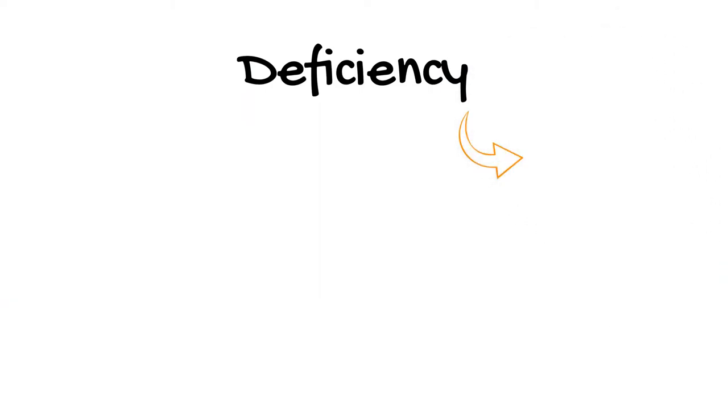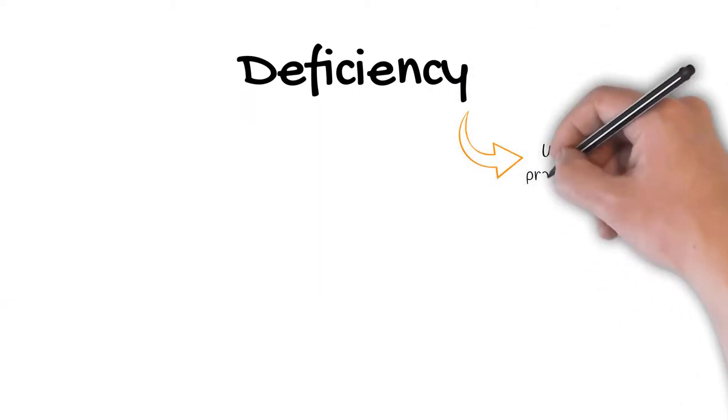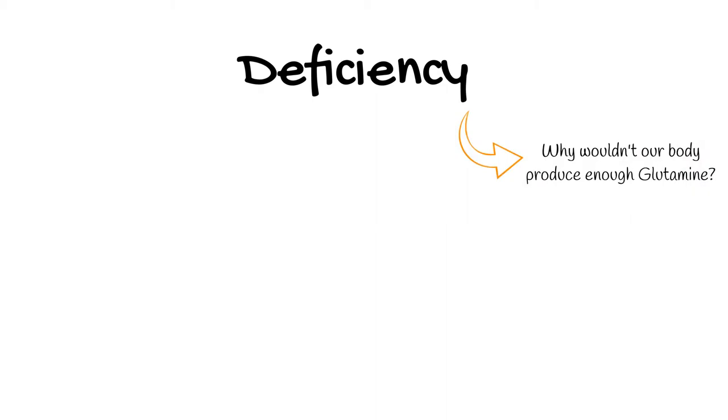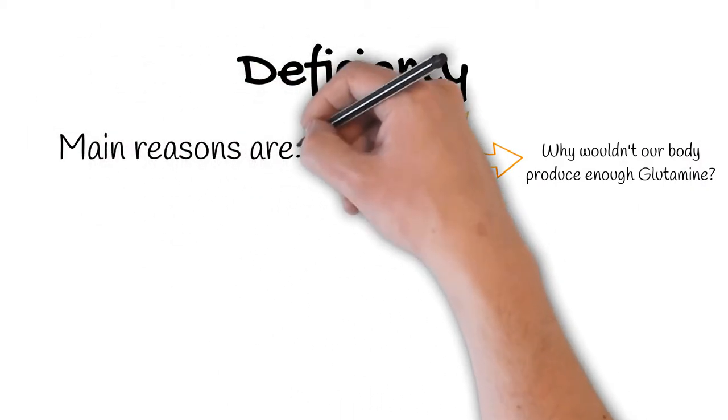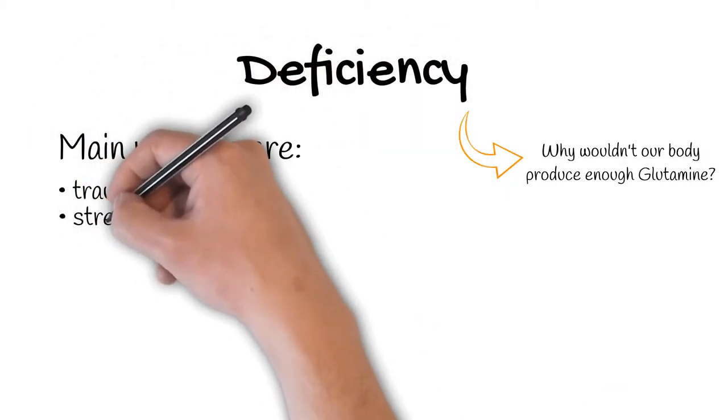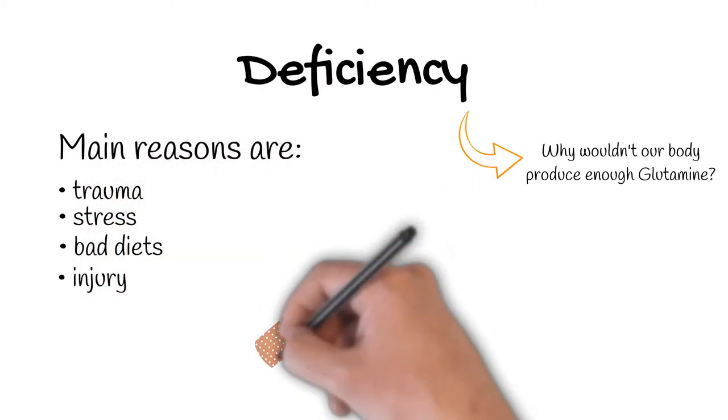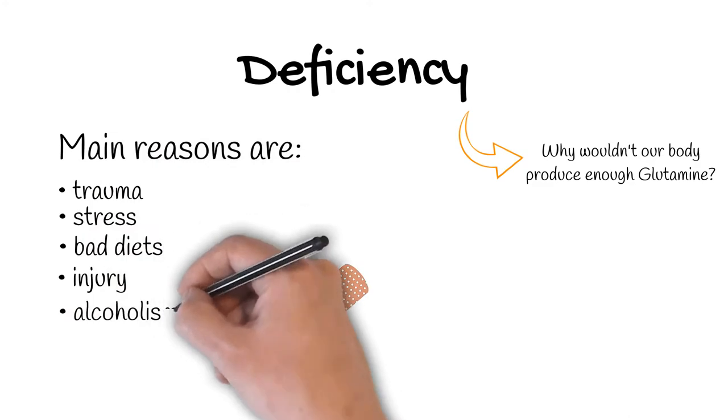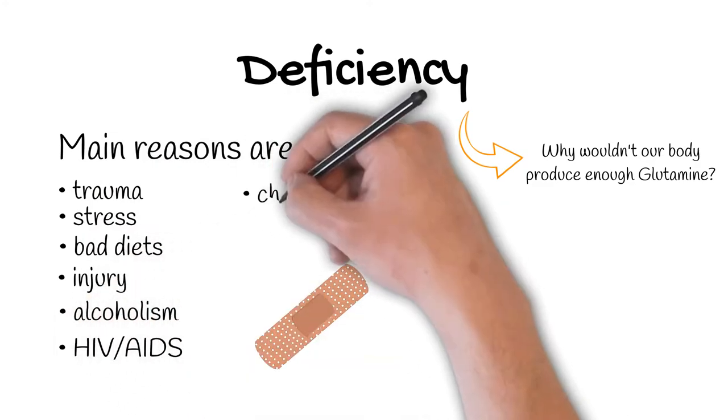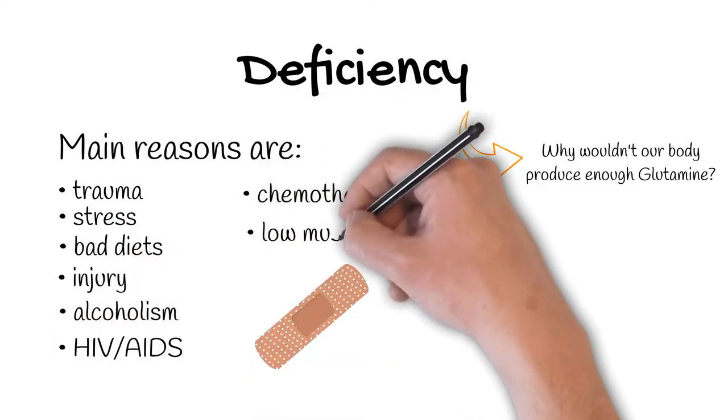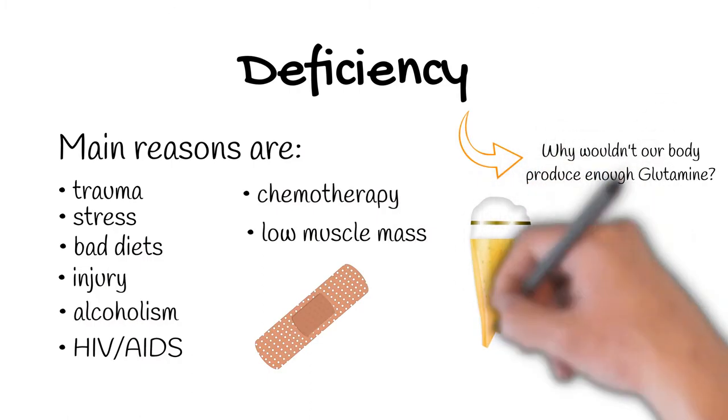So in which cases would our body not produce enough glutamine? Well many reasons could lead to glutamine production being too low. For example trauma, stress, bad diets, injury, even alcoholism, infections, chemotherapy and of course people with low muscle mass and people with HIV and AIDS might have issues.